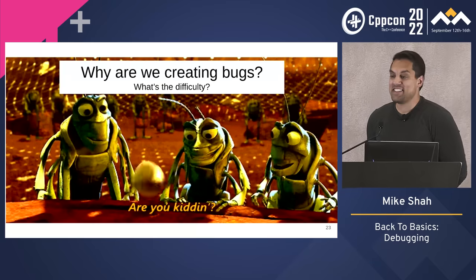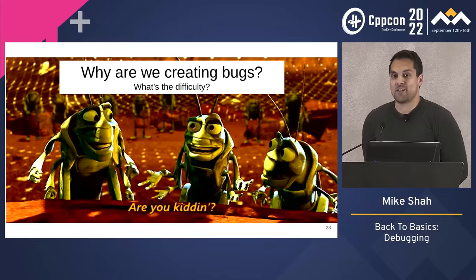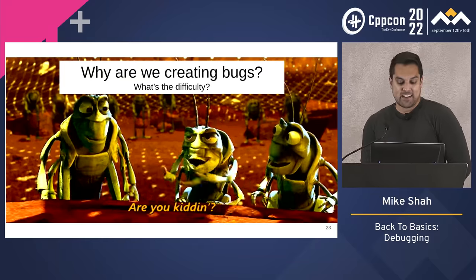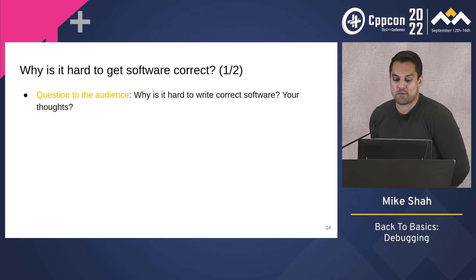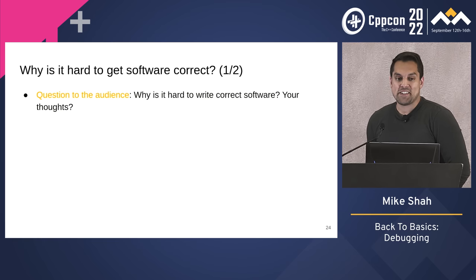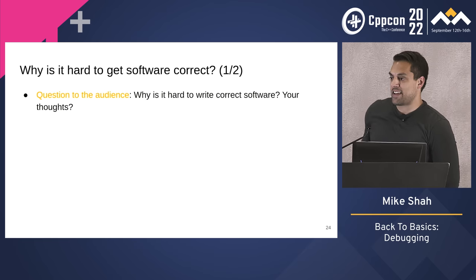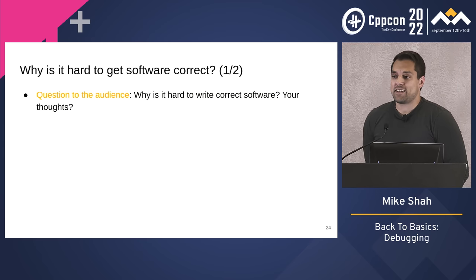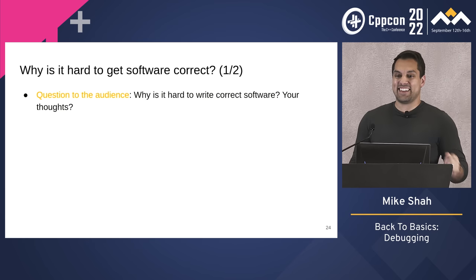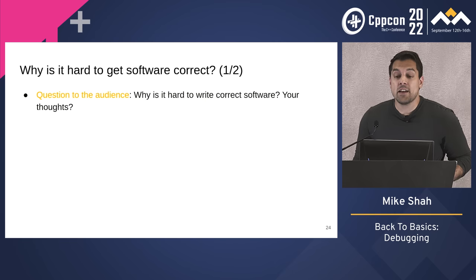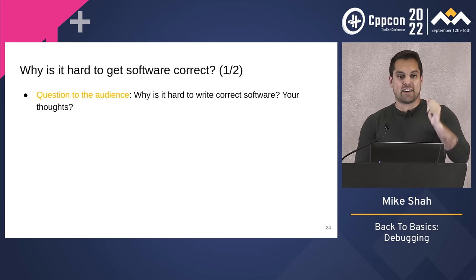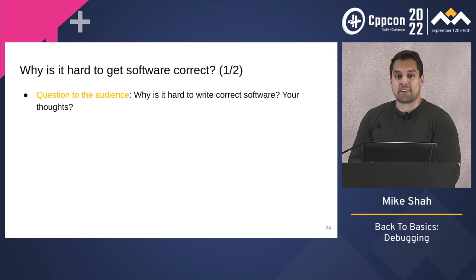With all these examples from great teams and companies, why are we creating all these bugs? Why is software so hard? Audience responses included: programming languages are complicated, customers think differently than developers, all developers think differently from each other so we need the same mental model, and the compiler doesn't have common sense — it follows the exact instructions you give it.